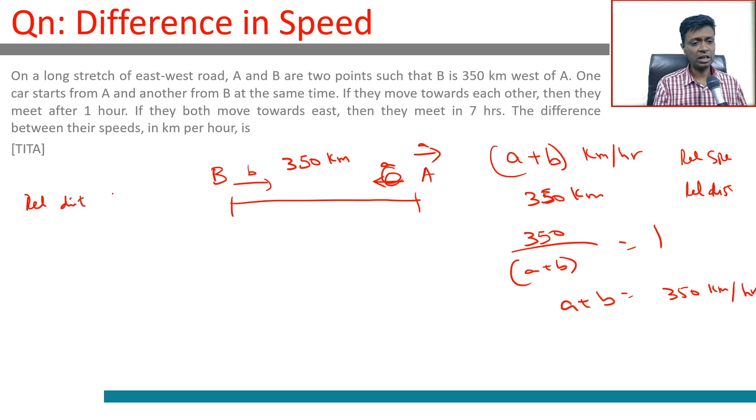Once again, the relative distance will be 350 kilometers. The 350 kilometer gap has to be caught up by B. Relative speed is B minus A. B has to be going faster. Only then they'll catch up because they're going east. So 350 by B minus A equal to seven hours, or B minus A is 50 kilometers per hour.